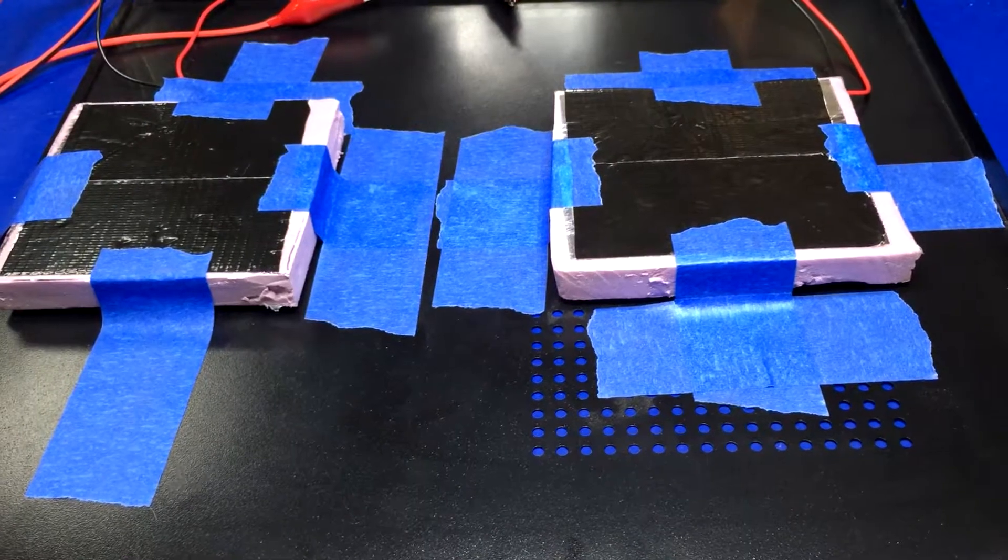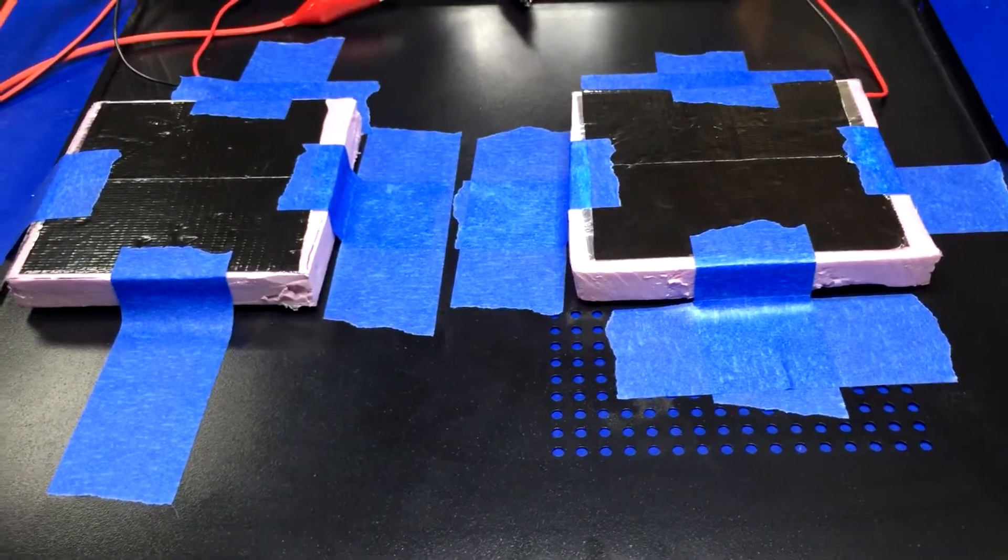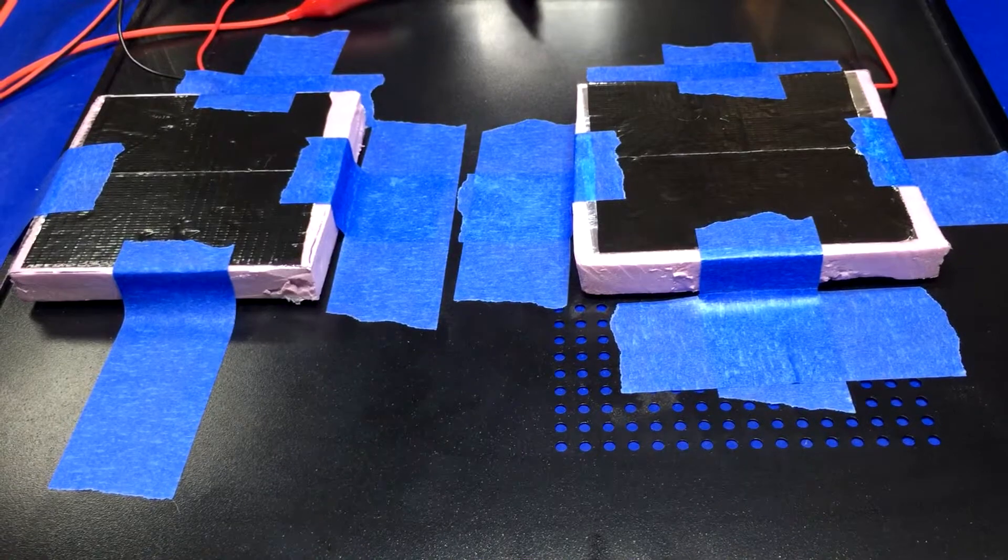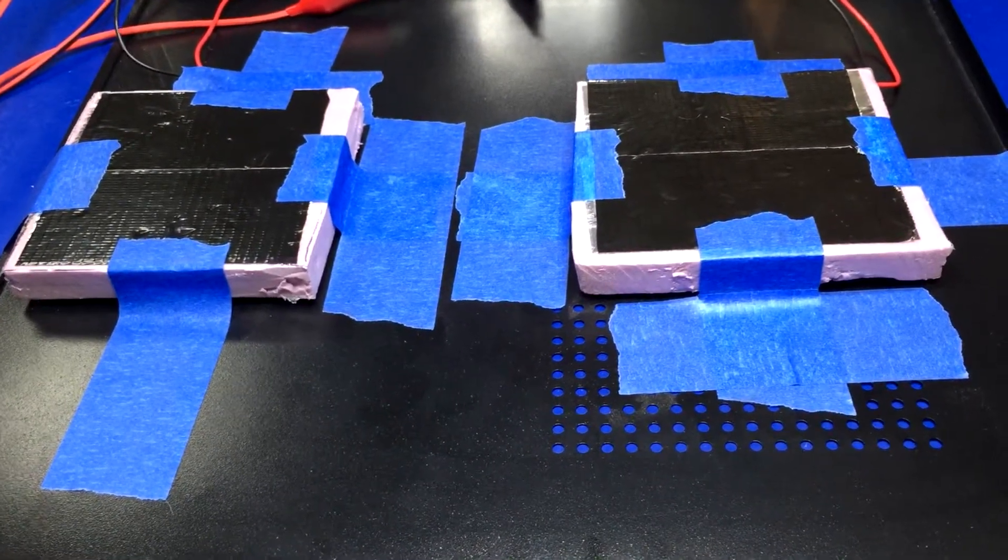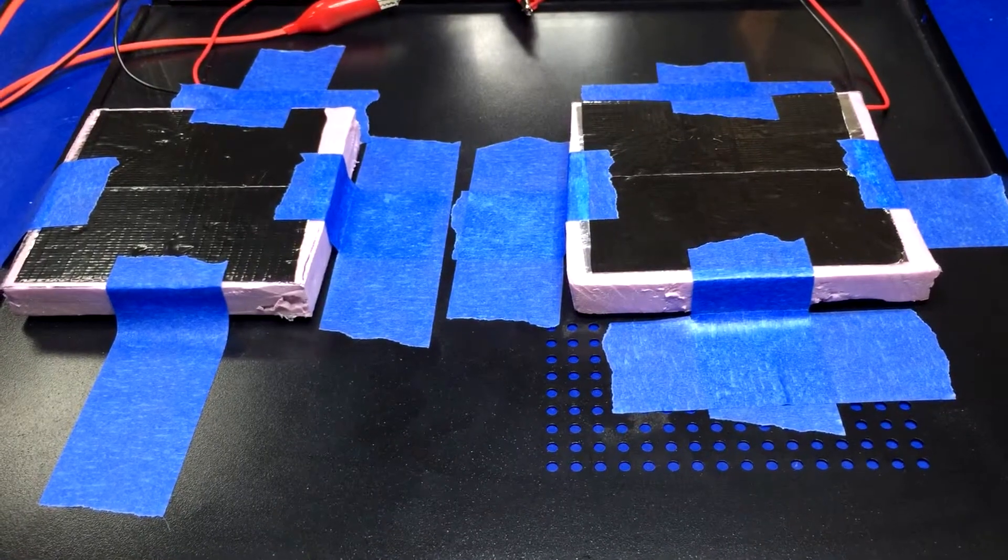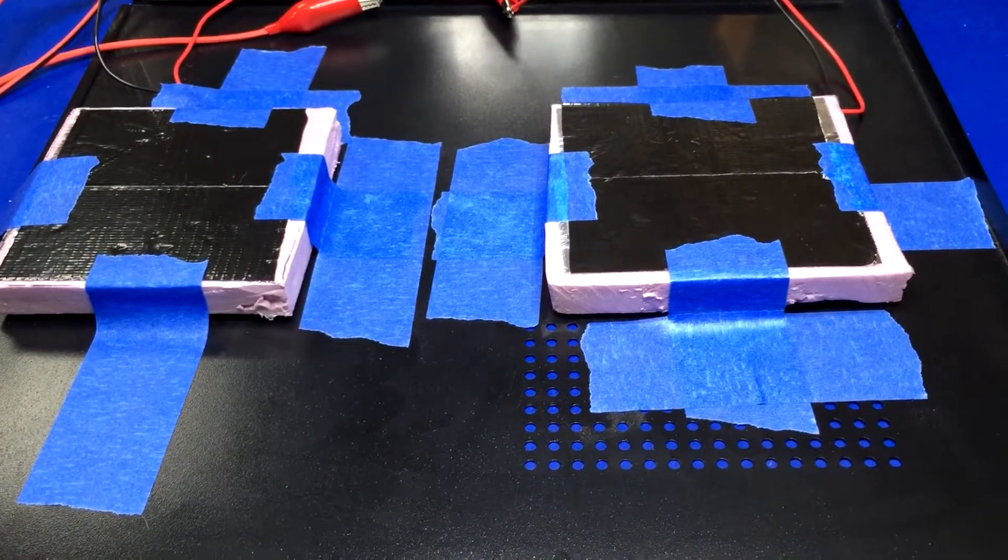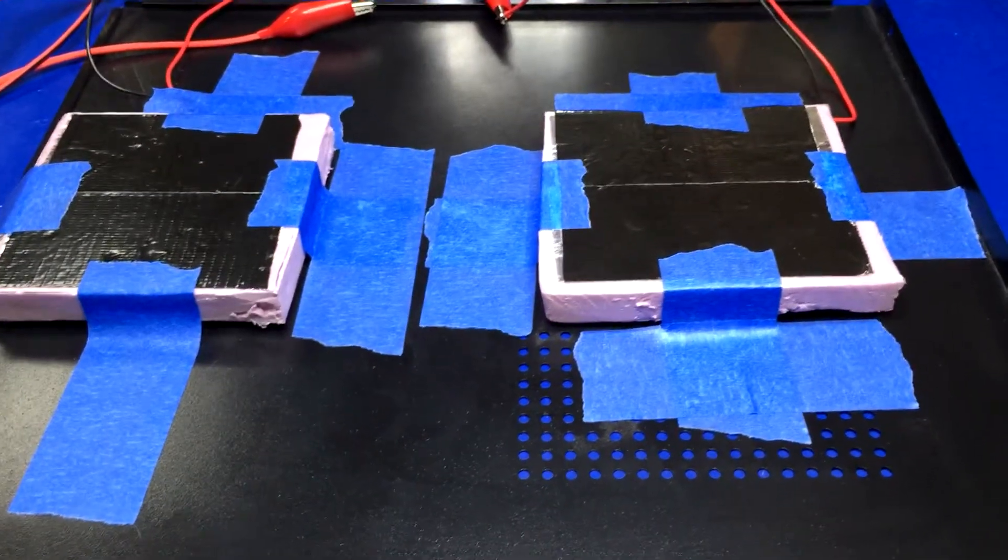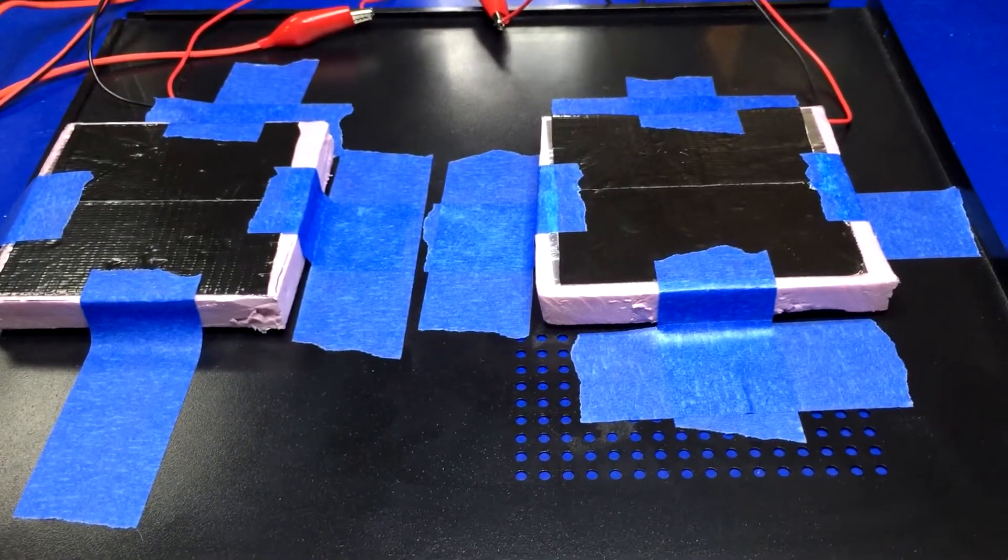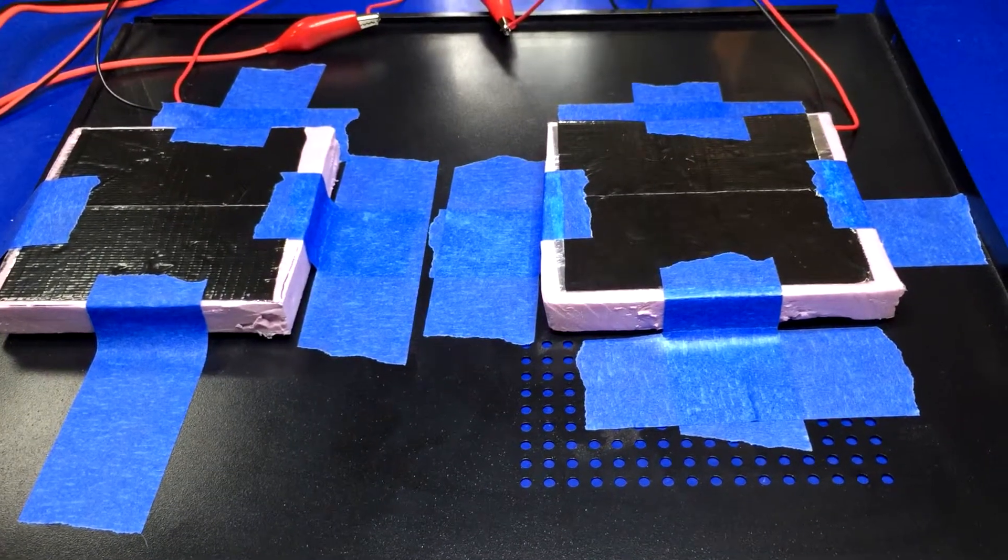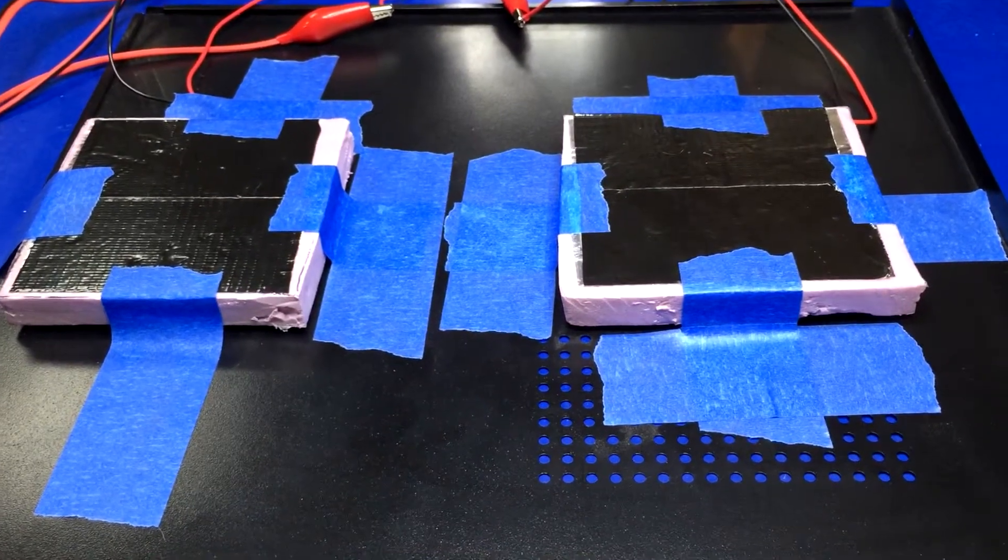So what a lot of people do is go the easy route: they buy a mini fridge, a cheap PID controller from eBay, and then a solid-state relay. Then they just have the PID controller switch the mini fridge on and off to control the temperature of the carboy sitting on the inside, along with the probe that plugs into the PID controller. You can get them for like 10 to 20 bucks on Amazon or eBay.